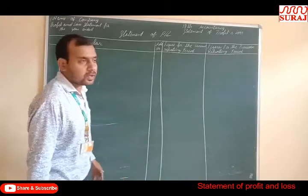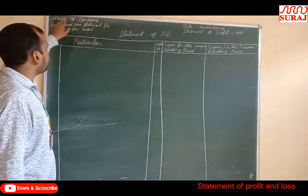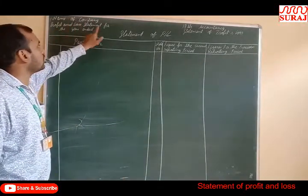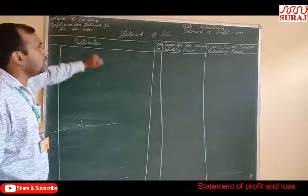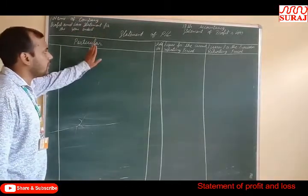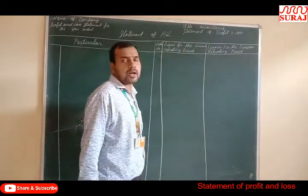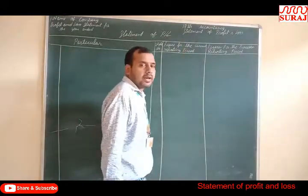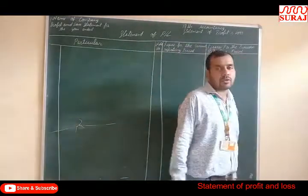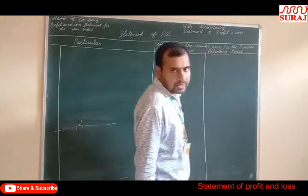Now, the format for the Statement of Profit and Loss. First one is Name of Company, Profit and Loss Statement for the year ended. The columns include: Particulars, Note Number, Figure for the current reporting period, and Figure for the previous reporting period.